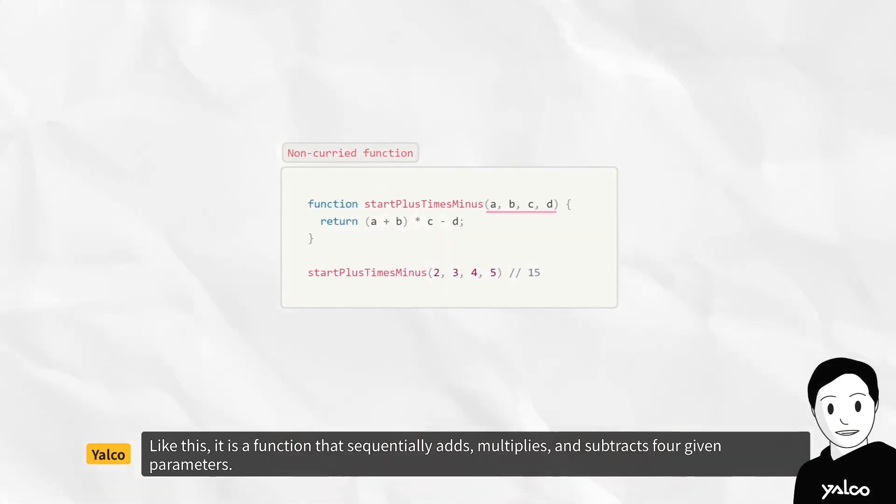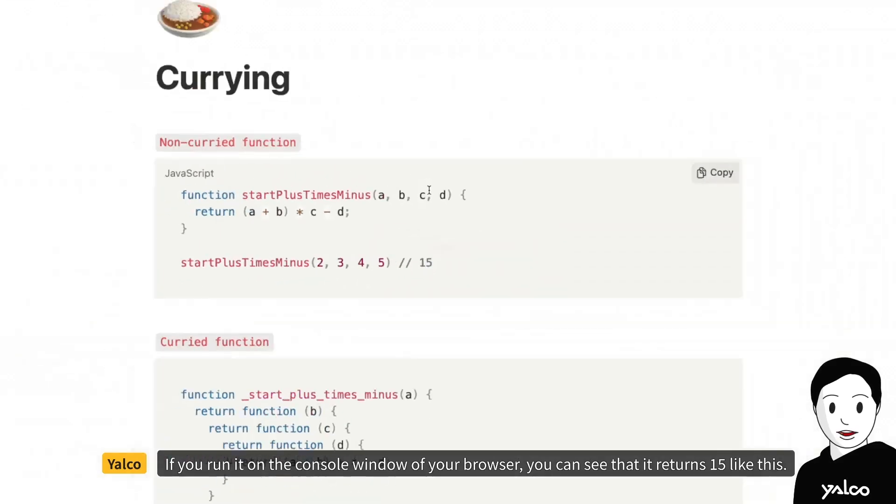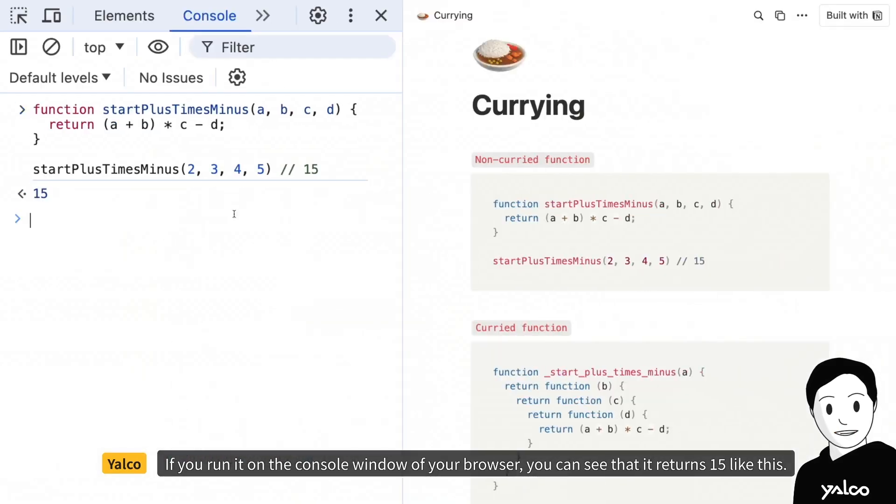Let's first look at a function that has not been curried. Like this, it is a function that sequentially adds, multiplies and subtracts four given parameters. As the name of the function indicates, it starts with a, adds b, multiplies by c and subtracts d. If you run it on the console window of your browser, you can see that it returns 15 like this.